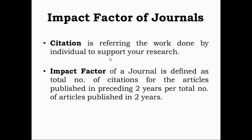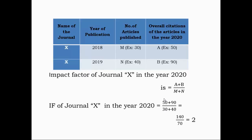The impact factor of a journal for the year is defined as the total number of citations for the articles published in the preceding two years, divided by the total number of articles published in the previous two years. It is not necessary that every article or paper should be cited. Now, let us see how the publisher calculates the impact factor of a journal.